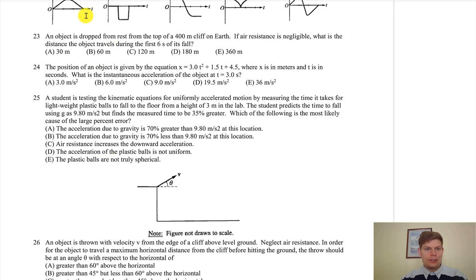Alright, let's see how fast we get through these. We got an object dropped from rest from the top of a 400 meter cliff on Earth. If air resistance is negligible, what is the distance the object travels during the first six seconds of its fall?